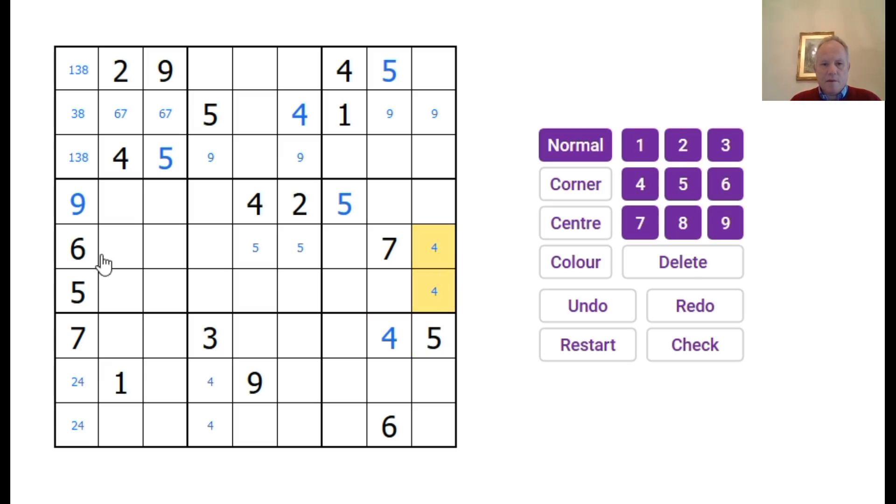Four there somewhere. Similarly, four there, but also a two there. That's a powerful pair potentially. Yep, that gives us a one there. We've got three, eight, seven as a triple now in those and that resolves the six sevens up there.